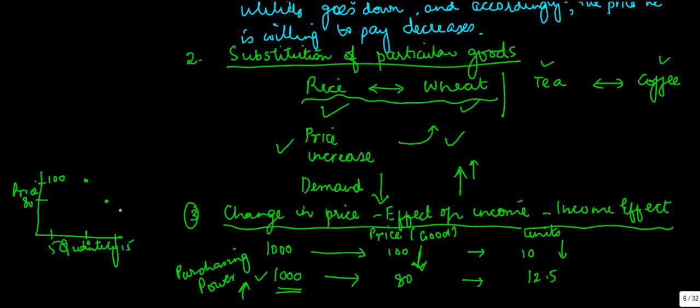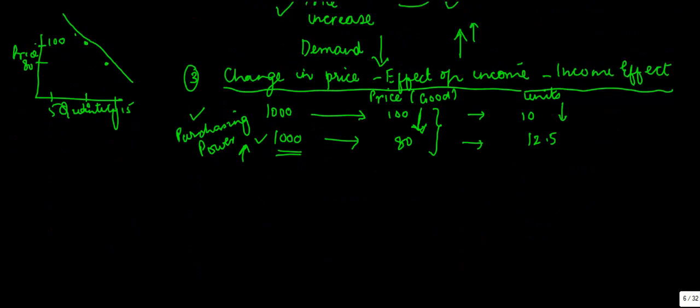So with price fall you are able to buy 12.5. So the downward slope continues. So with every fall in the price of the good, the purchasing power of the consumer increases and therefore the demand of the product also increases.